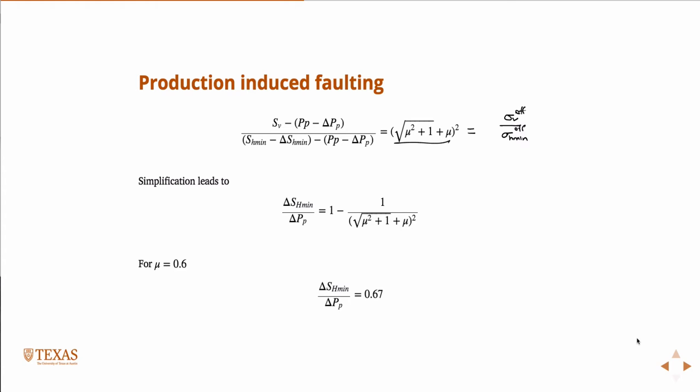And so then if you plug in a value, and remember what we said about friction, it's always .6. At least, that's the rule of thumb. We tend to always use that unless we have a good reason not to. And so if you did plug that in, then you get this parameter A is equal to .67.